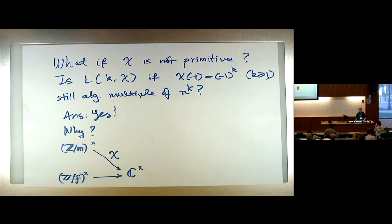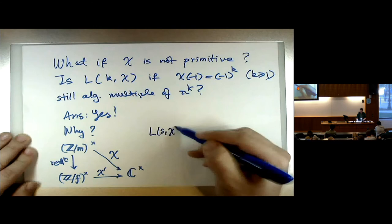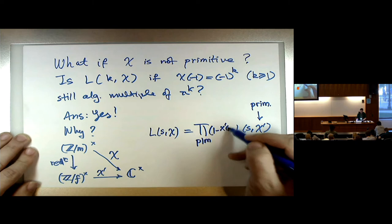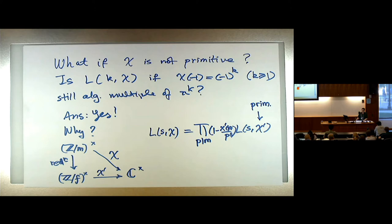Intuitively the conductor is like the minimal period of the sequence of values. The Germans developed a lot of algebra, so we use f because 'conductor' — it's called the Führer, the leader. So if chi prime is the primitive character and chi comes from it, then the L function of your original character is related to the L function of the primitive character — they differ by only a finite number of Euler factors, (1 − χ'(p)/p^s), over primes dividing m.